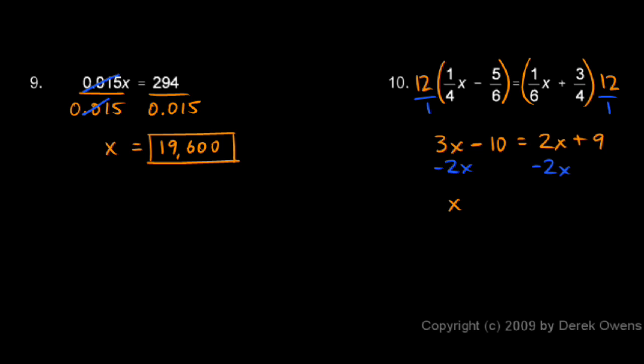On the left, 3x minus 2x is simply x, and I still have the minus 10 on the left. On the right, the 2x and the minus 2x have canceled out, and I have the 9. So x minus 10 is equal to 9.